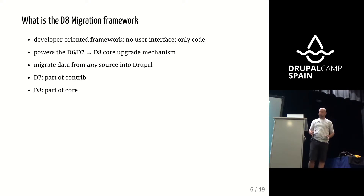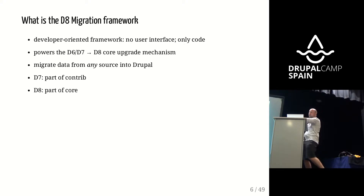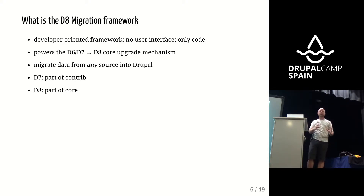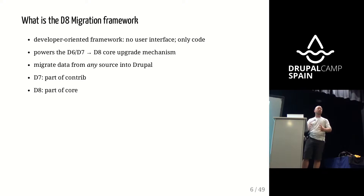That was the ground reason why Mike Ryan and Moshe Weitzman, around 2010, started building the migration framework as a contrib module in Drupal 7. The idea was: we're going to write code, talk to a data source, get our data, and somehow magically generate nodes or users or whatever in Drupal. Much of that core framework was then put into Drupal 8 core. So the core migration framework helps people do the same thing, but you don't have to install it anymore — it's part of Drupal 8.